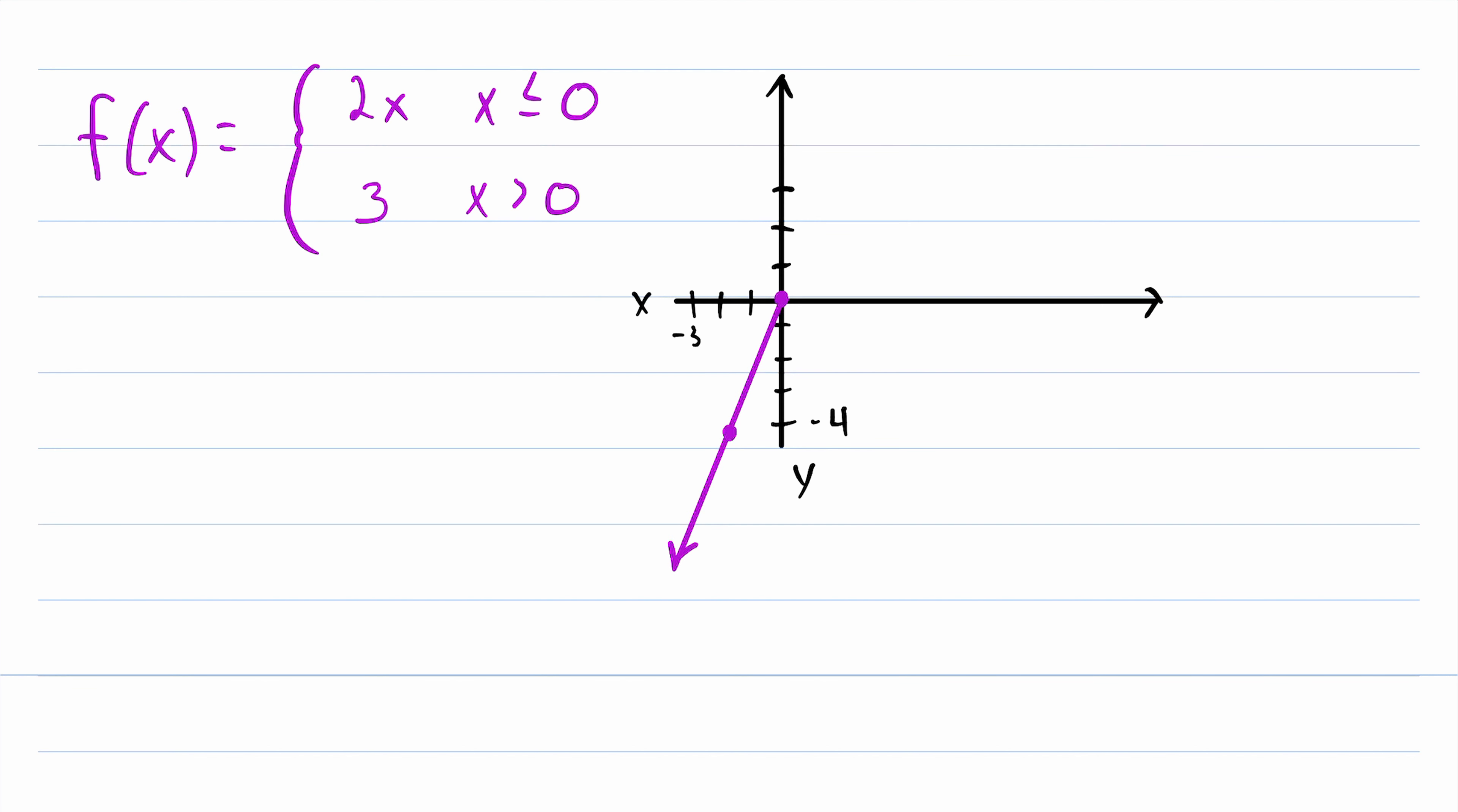What about the next piece? For the next piece, when x is greater than 0, the function is equal to 3. So that's very simple. We can just draw a line here going from y equals 3 all the way off to infinity, because for every x value greater than 0, f of x is equal to 3. However, there is one complication here.